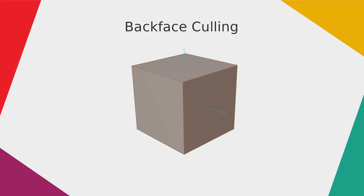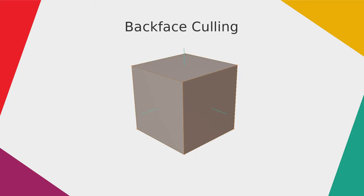The next technique is called backface culling. To understand backface culling you need to understand how normals work. Every polygon has a normal that goes straight out of it at a 90-degree angle to its face. Every polygon has a front and a back side. The normal only stands at a 90-degree angle on the front side — the back side has no normals.